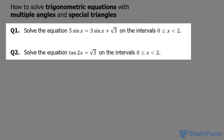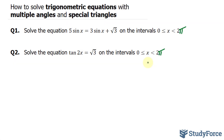The first question reads: solve the equation 5 sine x is equal to 3 sine x plus the square root of 3, on the interval between 0 and 2 pi. Question 2 reads: solve the equation tangent 2x is equal to the square root of 3 on the same interval.